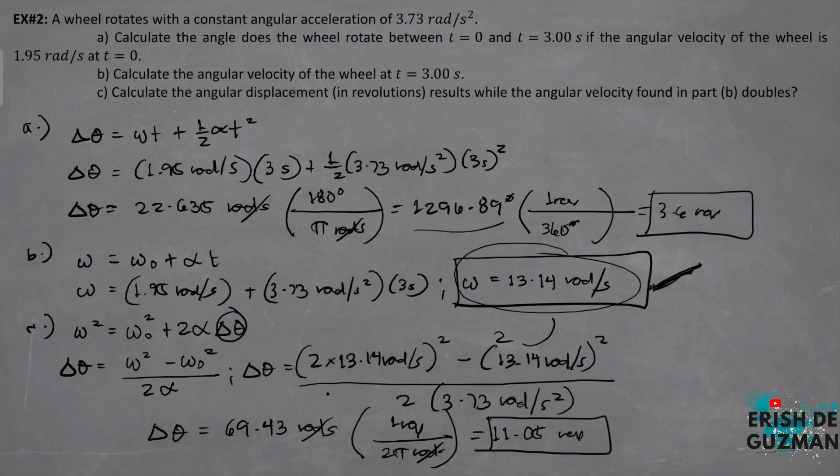Ganito kadaming ikot yung magagawa — from the angular velocity na 13.14 hanggang dun sa madoble yung angular velocity na yun. So this is example number 2.